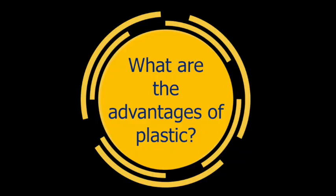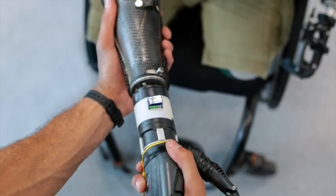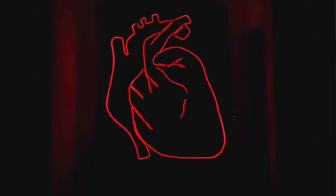Let's come up with a list of adjectives that describe the advantages of plastic. It's light, it's waterproof, it's cheap to make, it's easily mouldable, it's flexible, easy to clean, it can be transparent, it can be made into loads of different shapes and sizes, it's durable and it lasts a really long time. Plastic can literally be life-changing when used to create a new prosthetic limb, or a tiny medical device that can go right inside your heart and save your life.